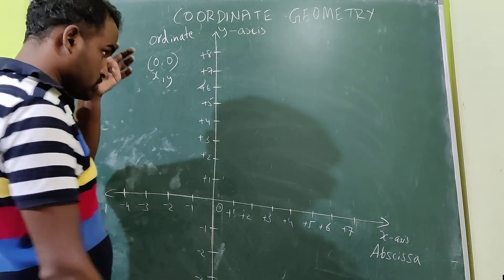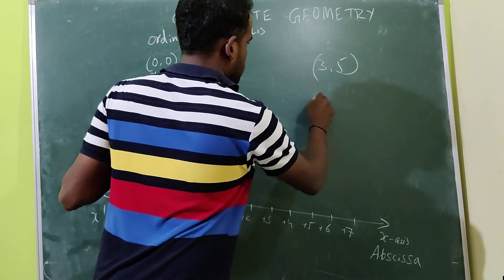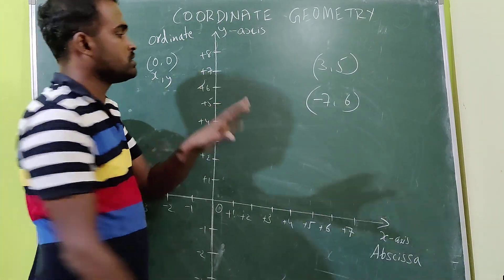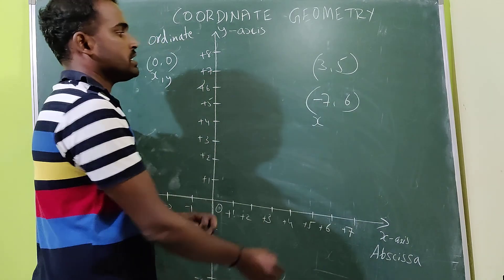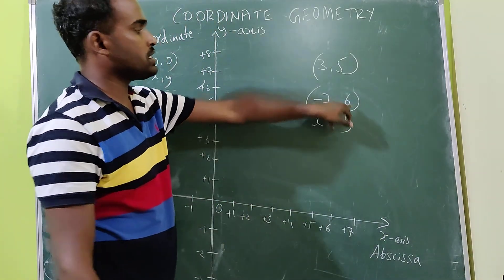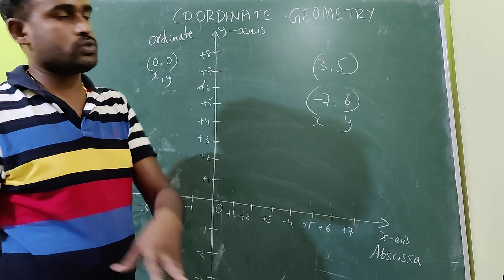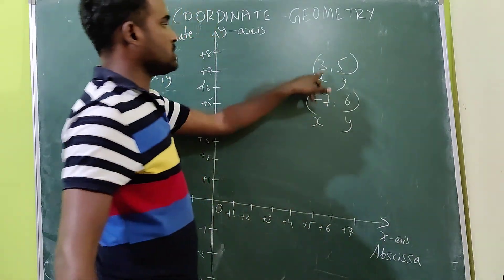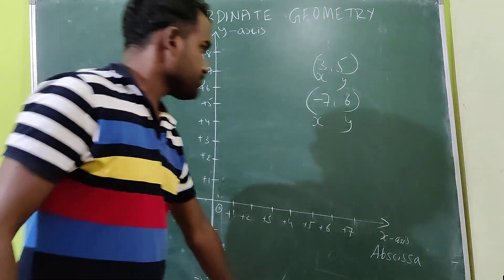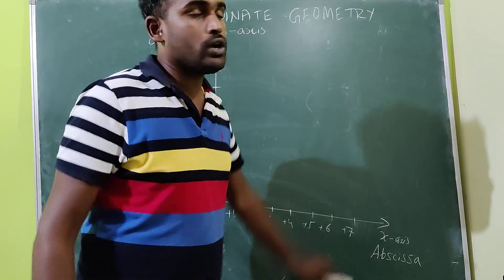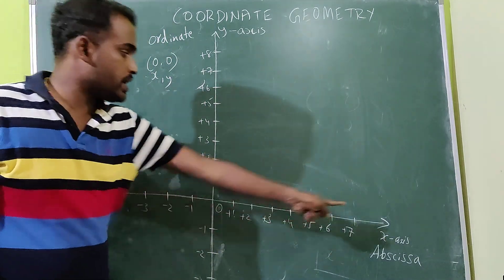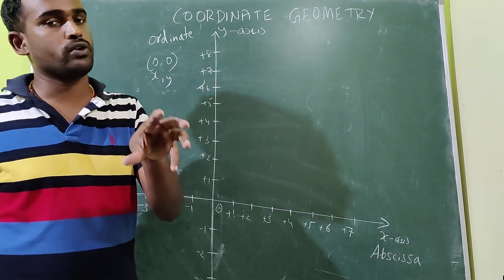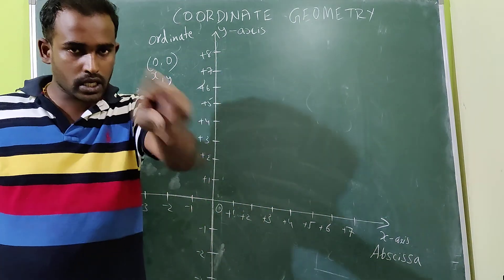If you write two numbers together, for example (3, 5) or (-7, 6), the first number is always the x-coordinate and the second number is the y-coordinate. So here x equals 3, y equals 5; and here x equals -7, y equals 6. Similarly, the coordinate of the origin: x equals 0, y equals 0, therefore coordinate of origin is (0, 0).